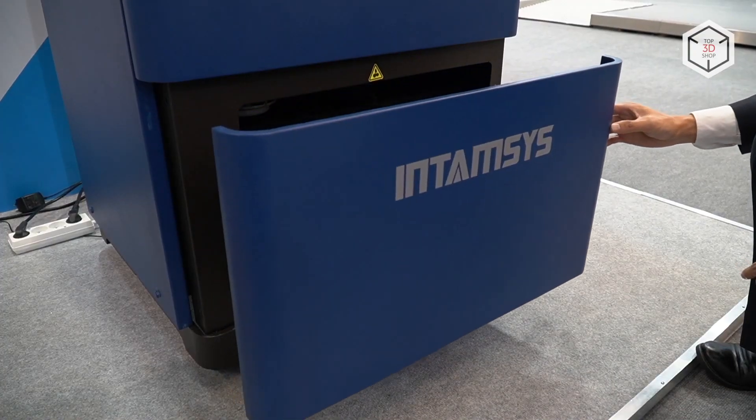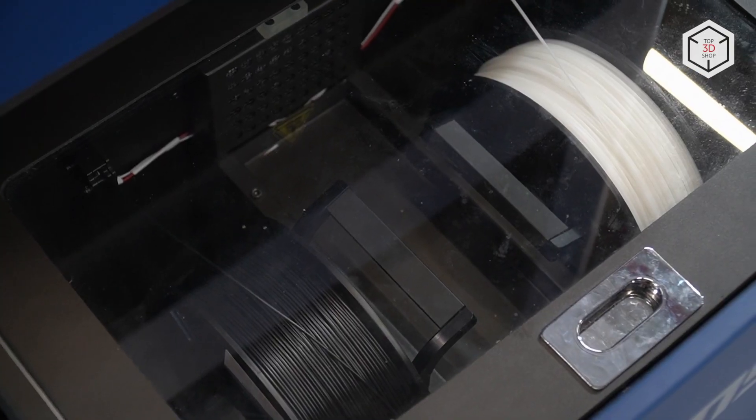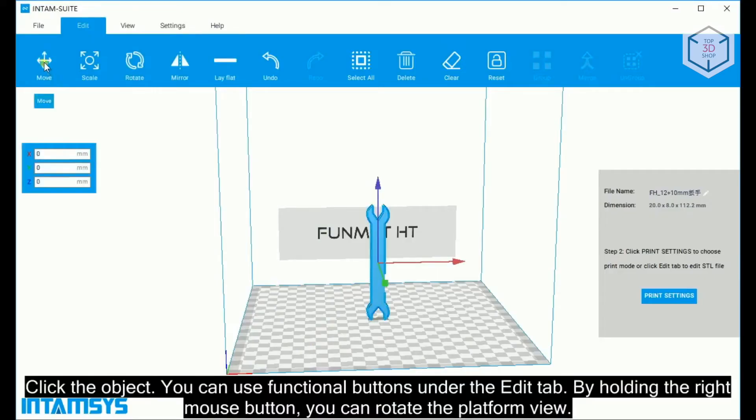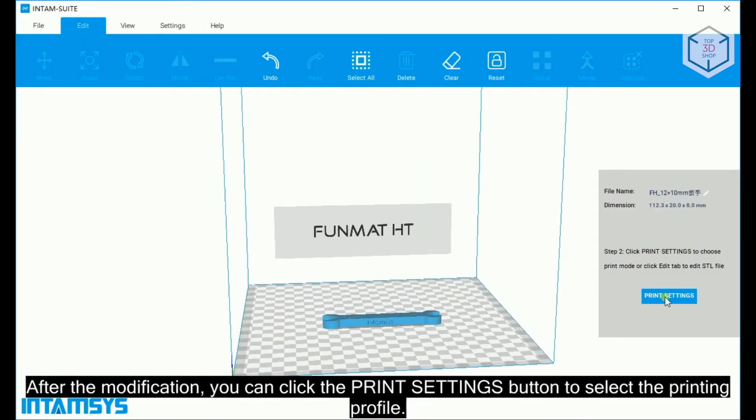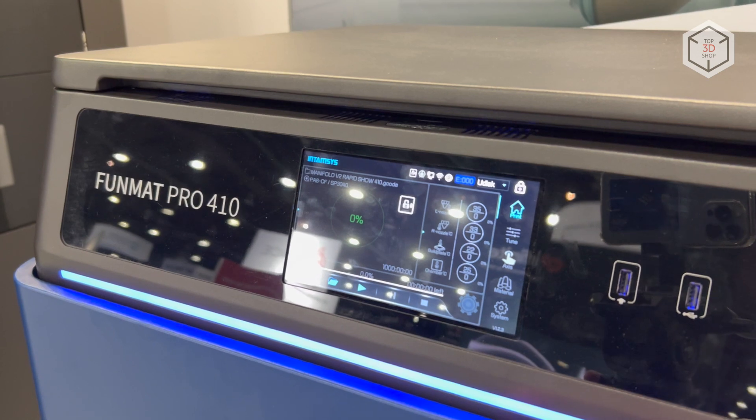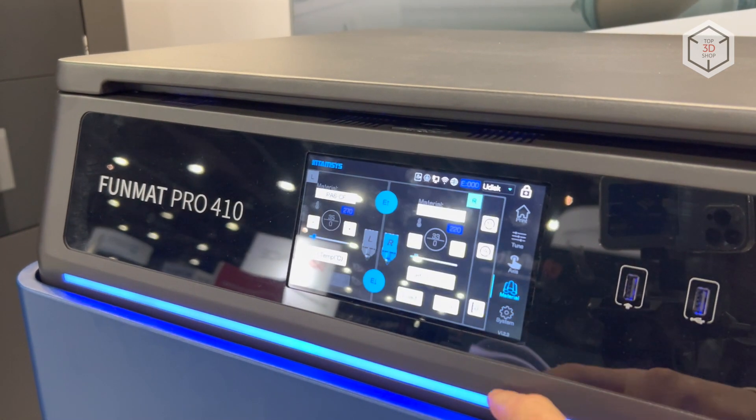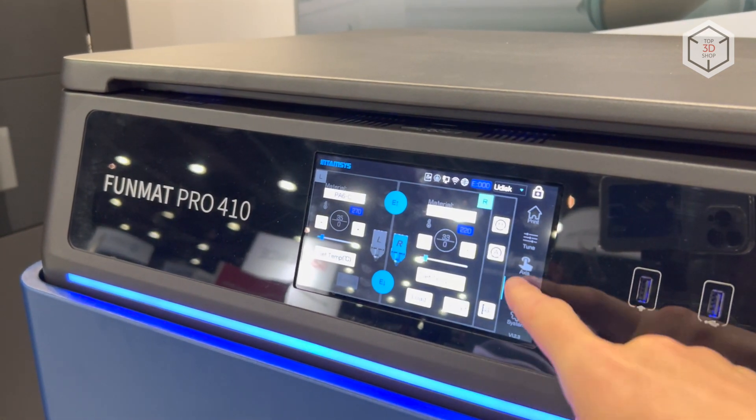Filament spools are placed separately in a compartment isolated from the build chamber. 3D models are prepared in the proprietary Entamsuite slicing software included in the package. To transfer files for printing, you can use the USB port, local area network or Wi-Fi connection.